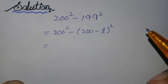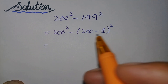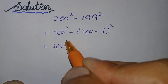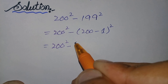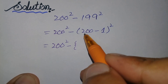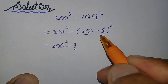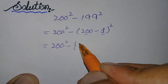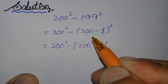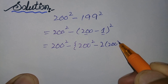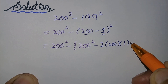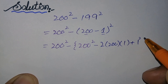The first term we write the same: 200 square minus. Using the algebraic identity a square minus 2ab plus b square, it will become 200 square minus [200 square minus 2 times a times b plus b square], where b equals 1.